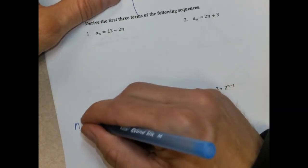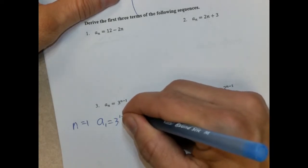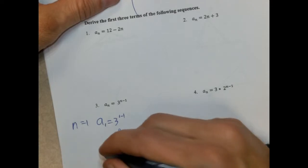So when n is equal to 1, we're going to have a_1 equals 3 to the 1 minus 1, 3 to the 0, and that's going to be 1. So a_1 is 1.